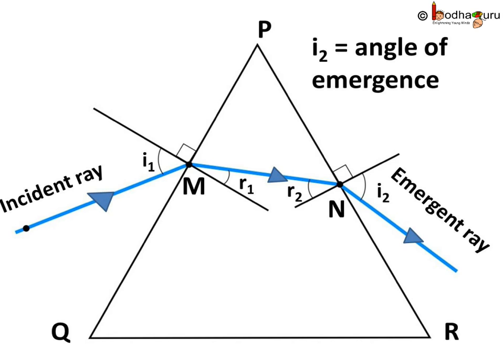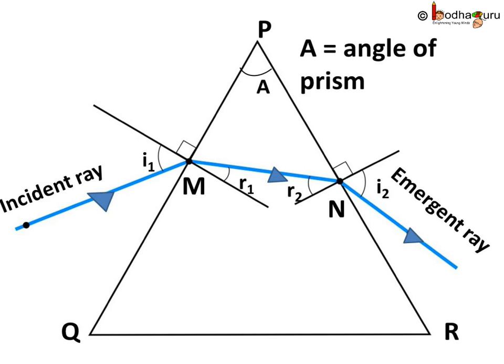I2 is called the angle of emergence. If we see at the second surface PR, the light ray has entered from glass to air. Hence, it has bent away from normal.